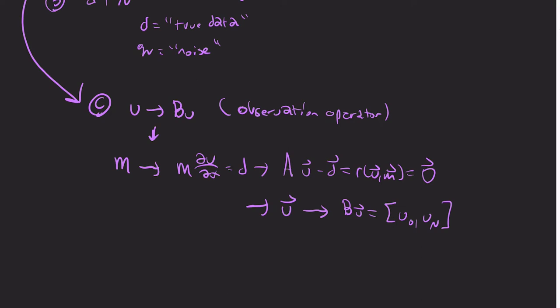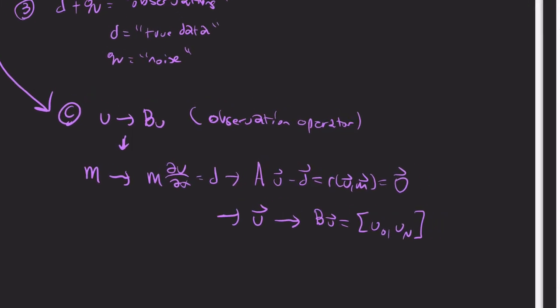So for example, in certain experiments, you can only see things on the boundary of the domain. In this case, you have a 1D domain. And so that boundary is just two numbers.